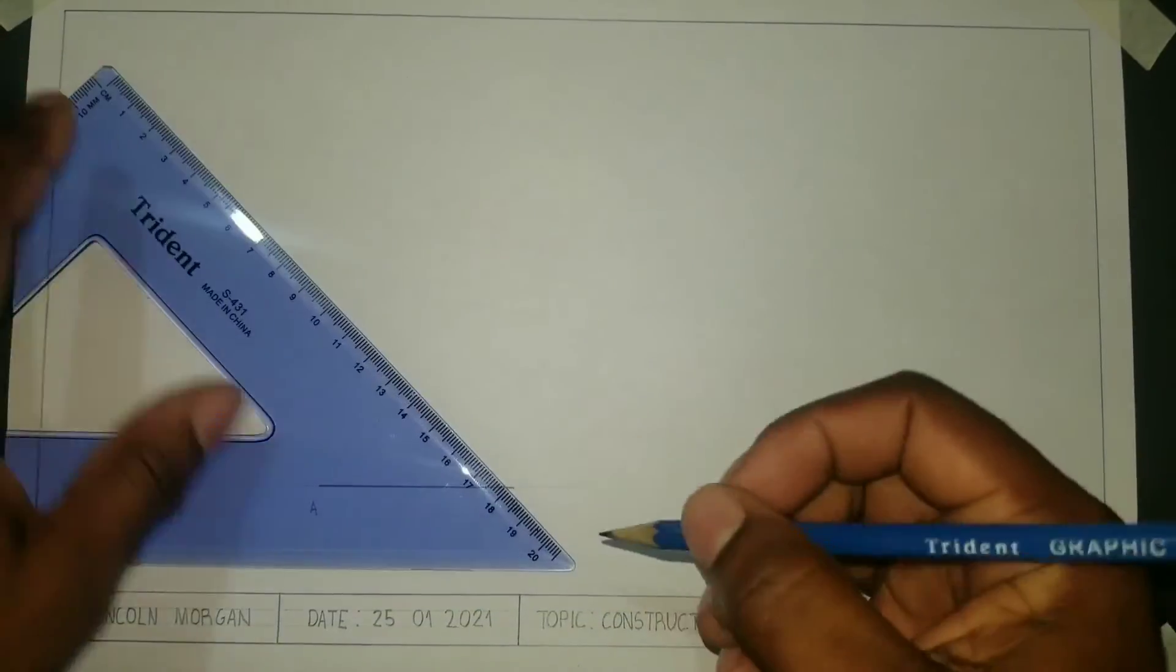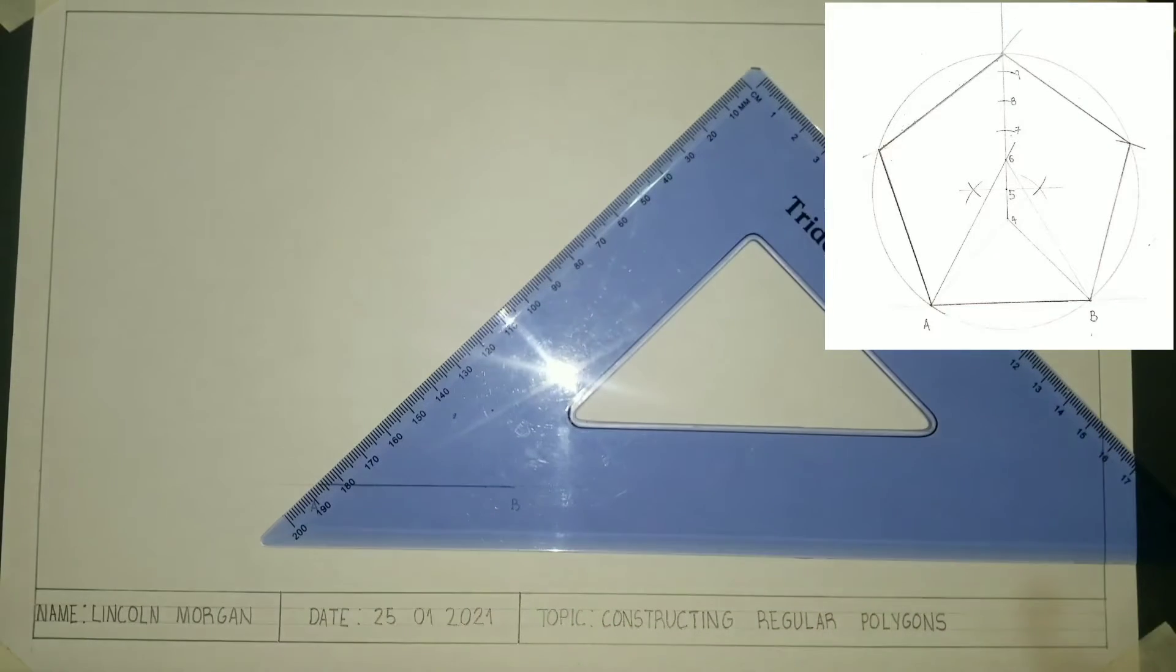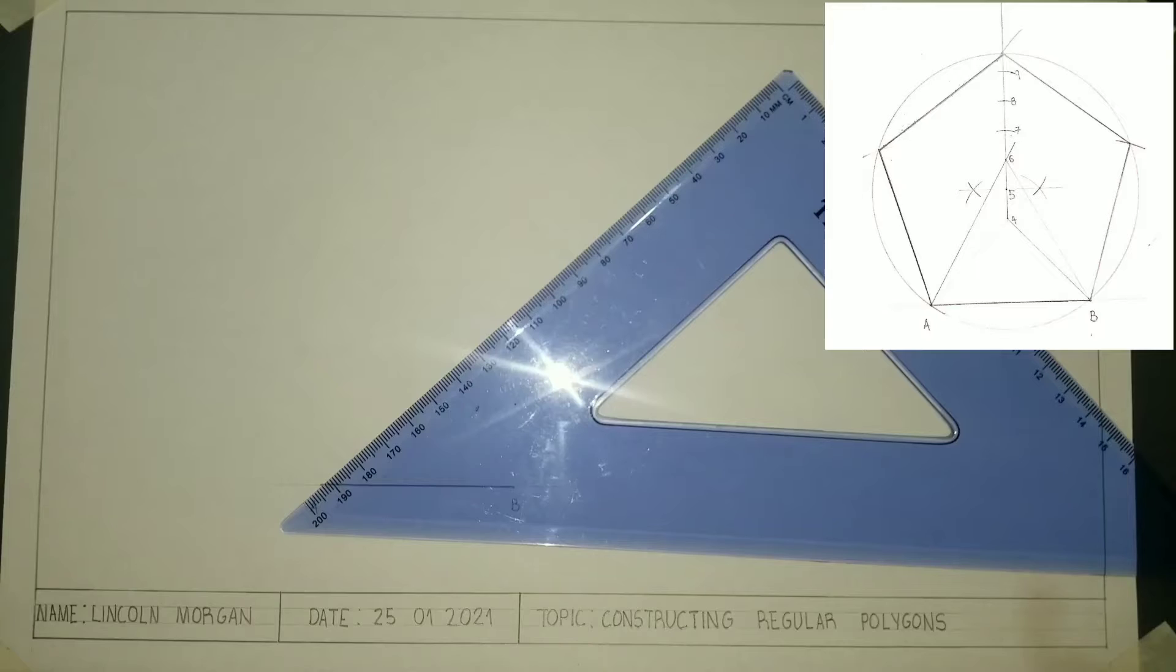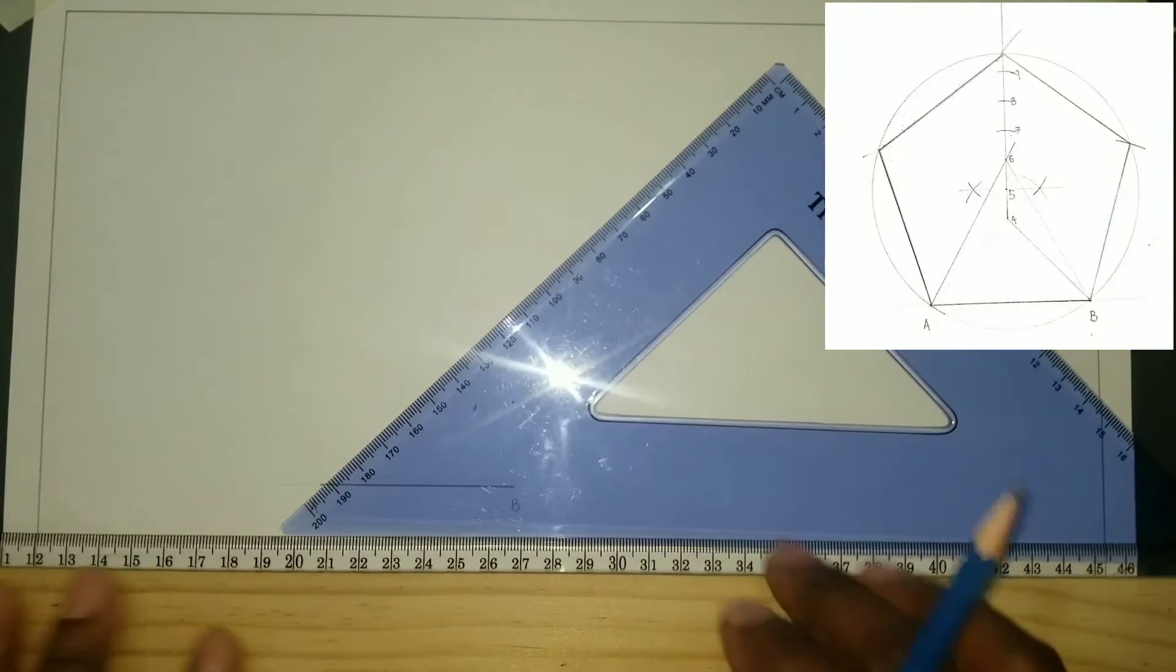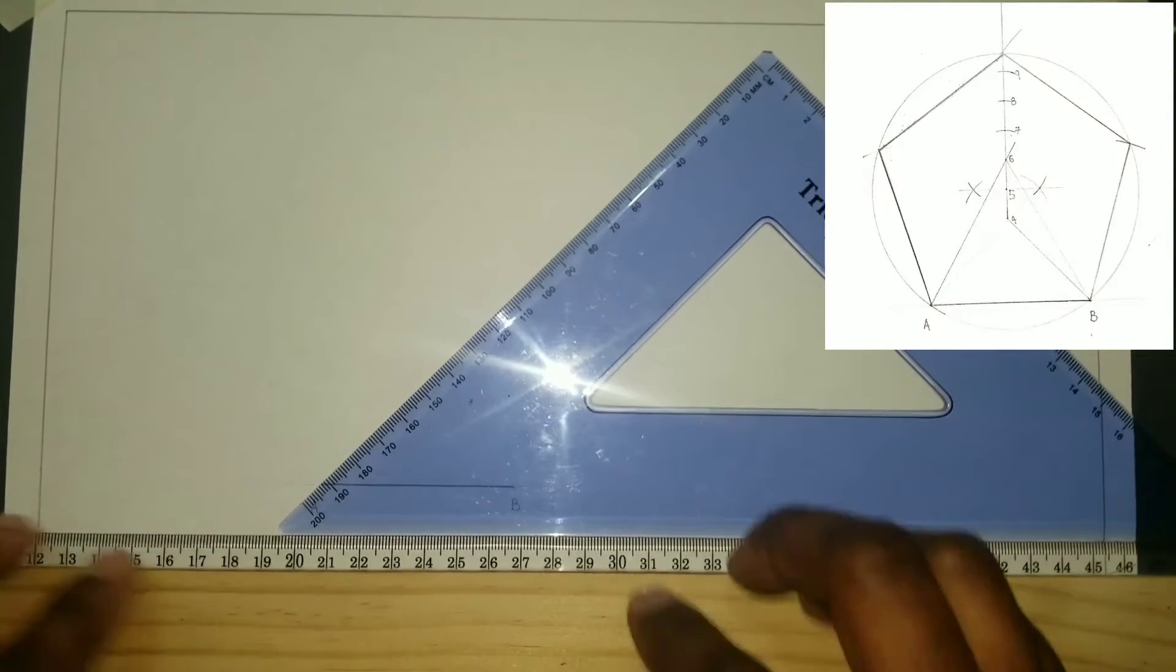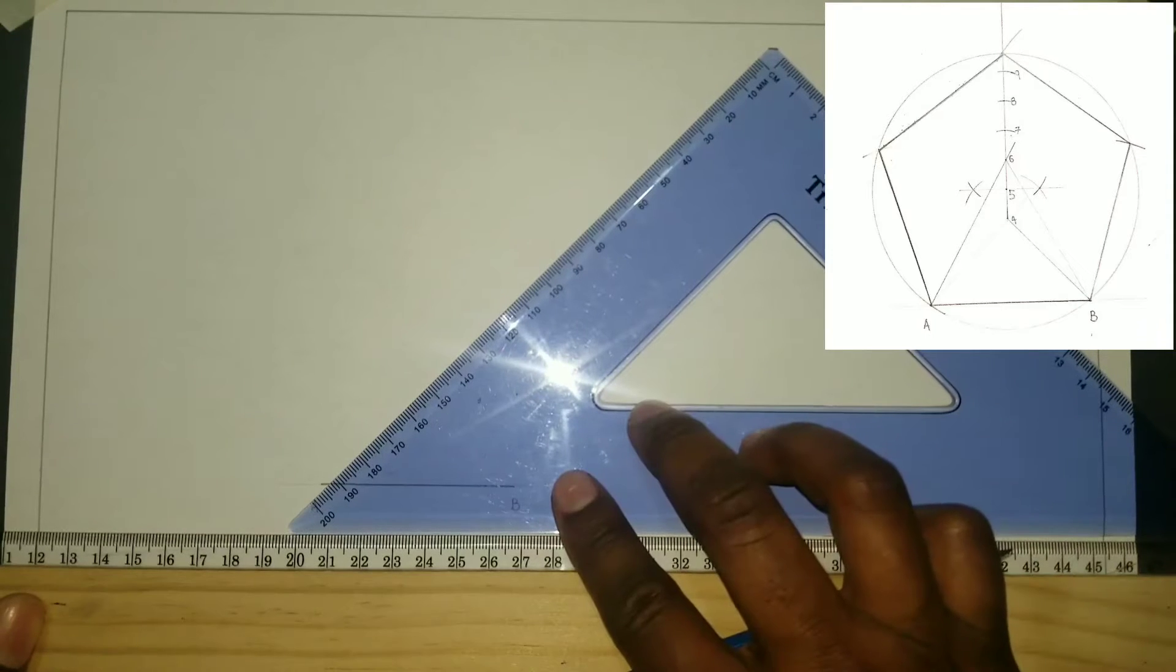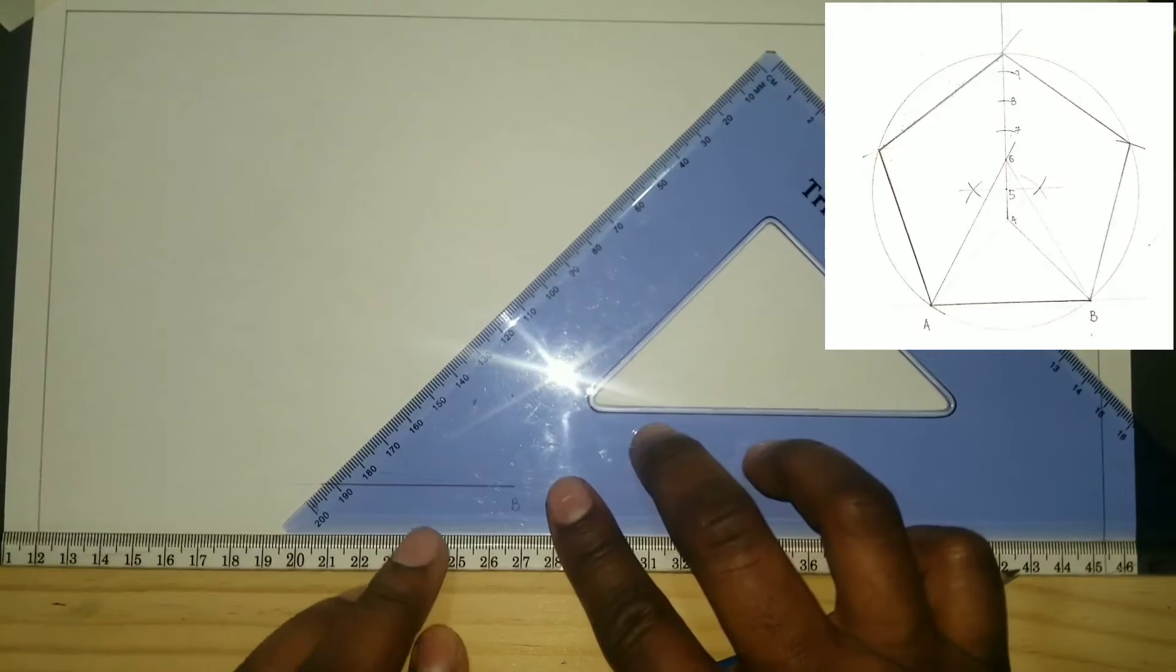We will now draw a line from B and also from A using our 45-degree set square. For this we must put our T-square under our set square. The T-square must be held firmly in place with your left hand.